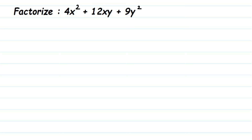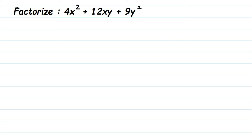Here's a question from factorization: factorize 4x² + 12xy + 9y². When you factorize, you have to write the given expression in terms of its factors. For example, the factors of 6 can be written as 2 × 3, so 6 is written as a product of something. Now how do we convert this expression into such a form? You can see here we have all positive signs.